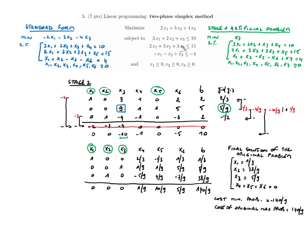Reading the solution from the tableau: x1 = 1/3, x3 = 5/9, x2 = 38/9. All other variables are non-basic and set to zero. Since x4 and x5 are zero, the first two constraints are active. As usual, verify the solution meets all constraints. The cost of the original maximization problem is 140/9. This concludes question 3.